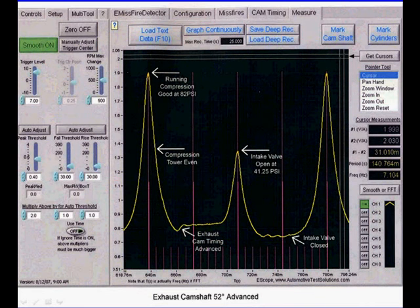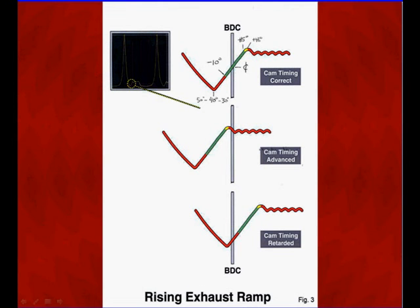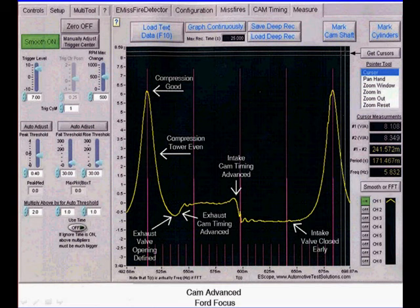They also have a pressure transducer that can help us determine cam timing, and they give us some directions here. In the top left-hand corner you see the waveform — they're pointing to a very small part of it. At the top, they're saying that's the waveform when it crosses bottom dead center, and that's correct cam timing. There's one for advanced cam timing, and the bottom one is for retarded cam timing. You're going to place a pressure transducer in a spark plug hole, run the vehicle, and look at that very small part of the waveform to determine if you have correct valve timing.